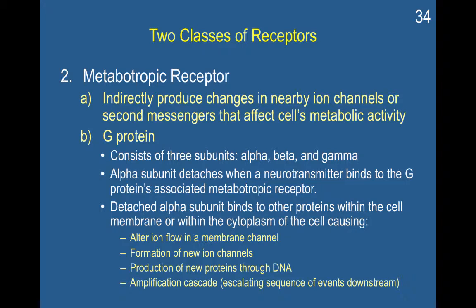Basically, this alpha subunit can detach and travel elsewhere to instruct the cell to produce a new protein it hasn't produced before. This new protein can then have a cascading effect on behavior — it can result in the forming of a new transmitter, or a wide range of effects on the body. You can also have an amplification cascade, an escalating sequence of events downstream. The production of new proteins through DNA can also change the expression of existing genes, activating dormant genes to cause the synthesis of additional proteins. So these metabotropic receptors are really important for changing how a cell will function.